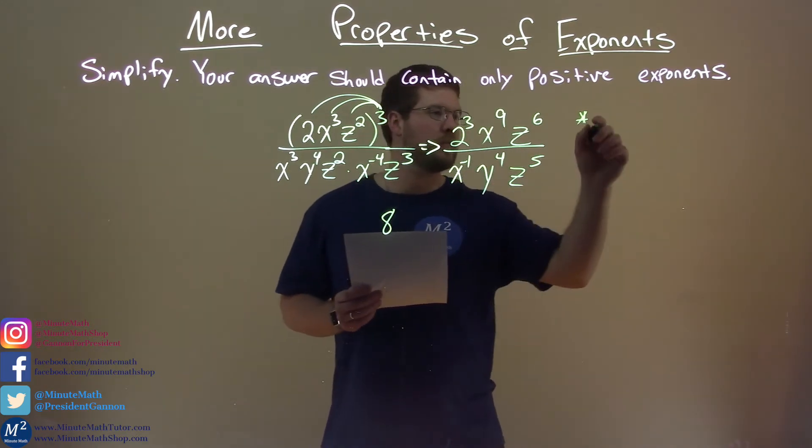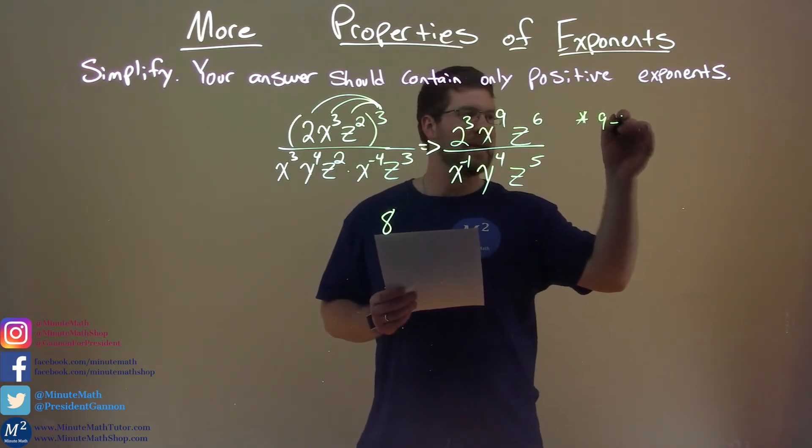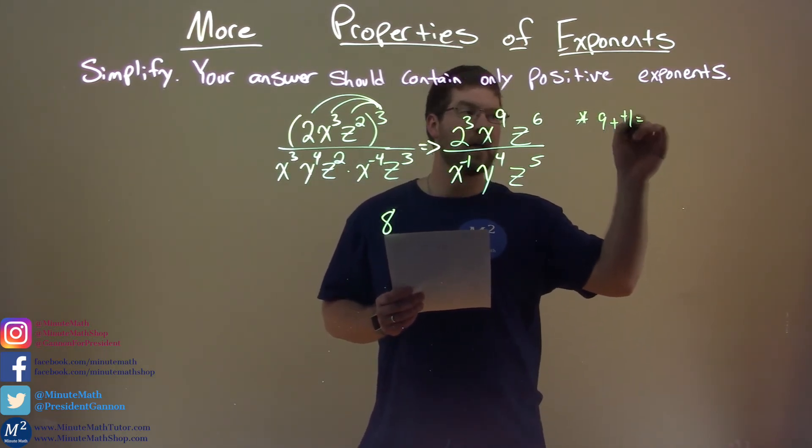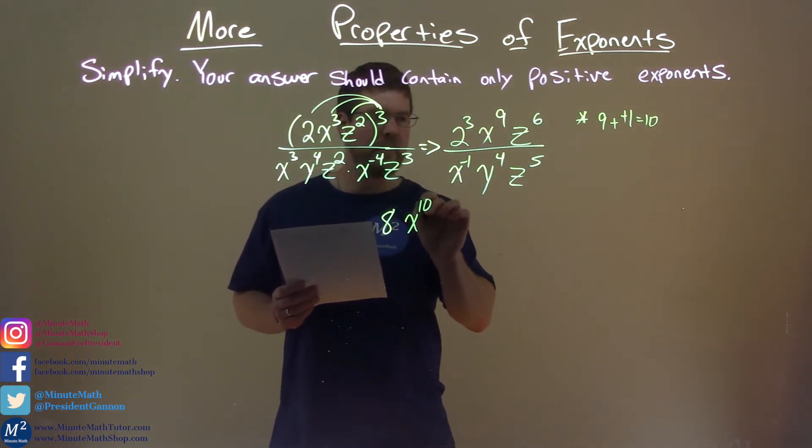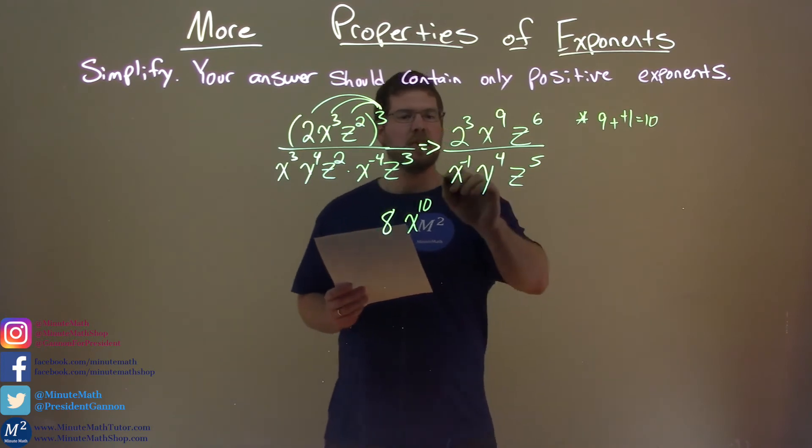Division, we subtract the exponents. So, 9 minus a negative one plus a positive, right? Same thing, 10. So, in the numerator, we have x to the tenth power here. So, we've dealt with the x's, we've dealt with the number.